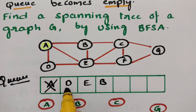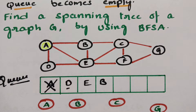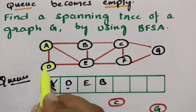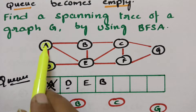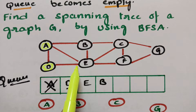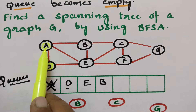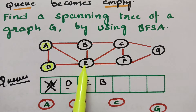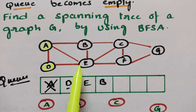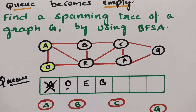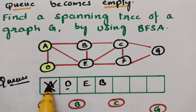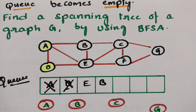Now I have to visit D. After visiting D, I have to explore it — exploring means finding the adjacent vertices. A is already visited, so leave it. E is to be visited, but E is already in the queue. A is already posted in the queue and E is already posted. So there is no need — delete D from the queue.